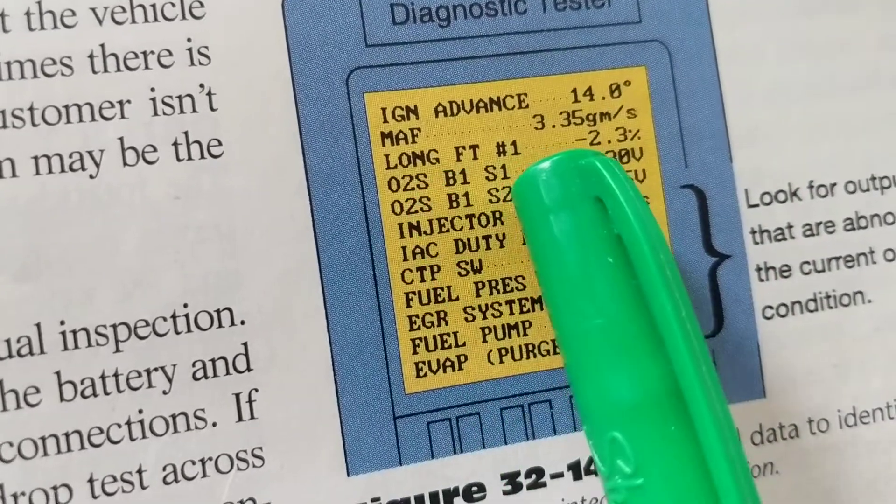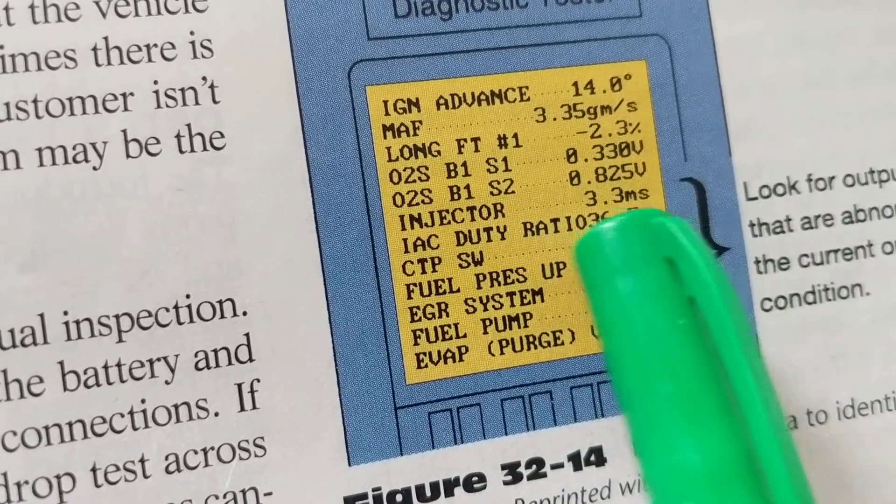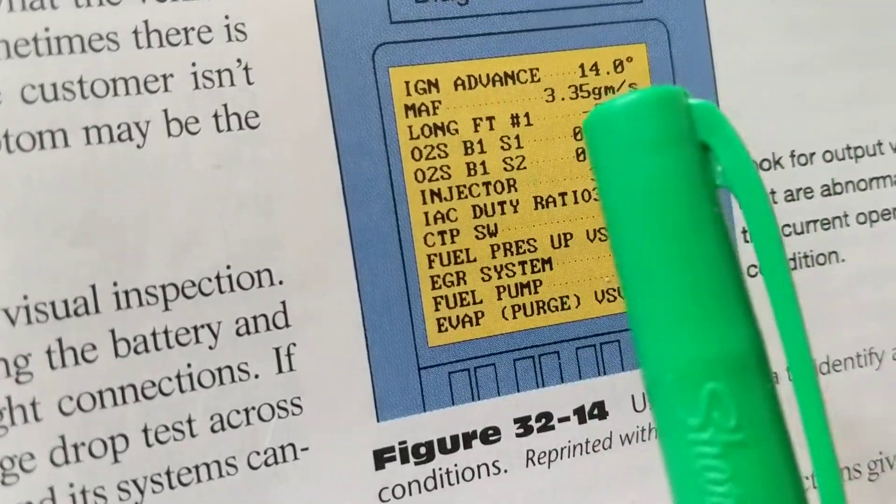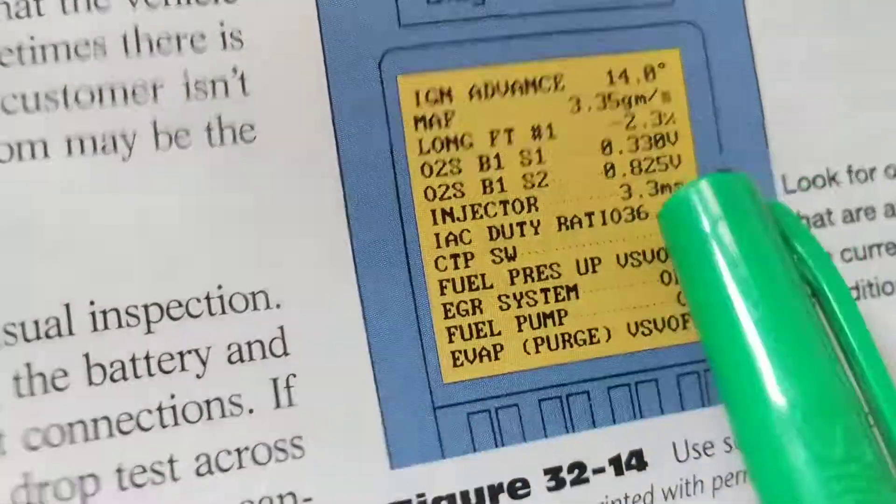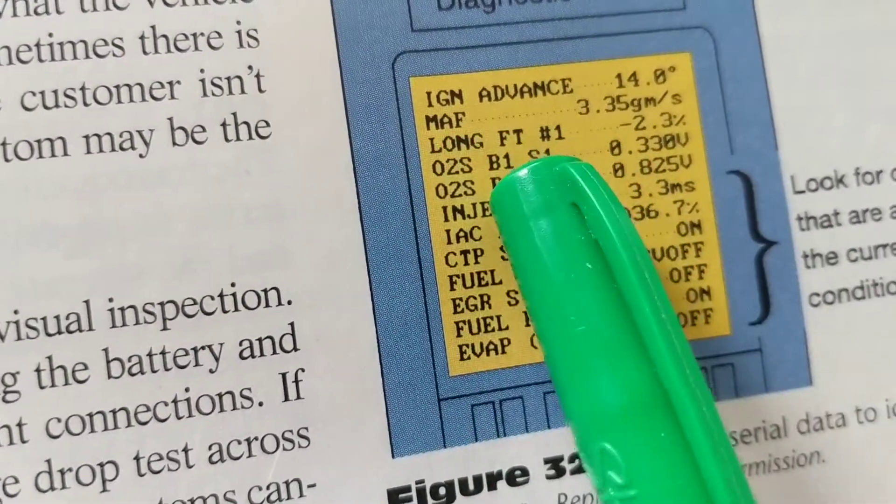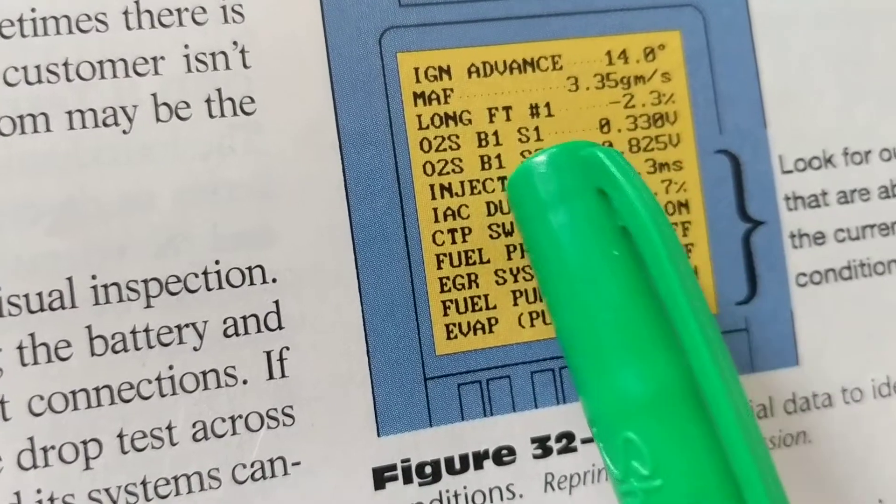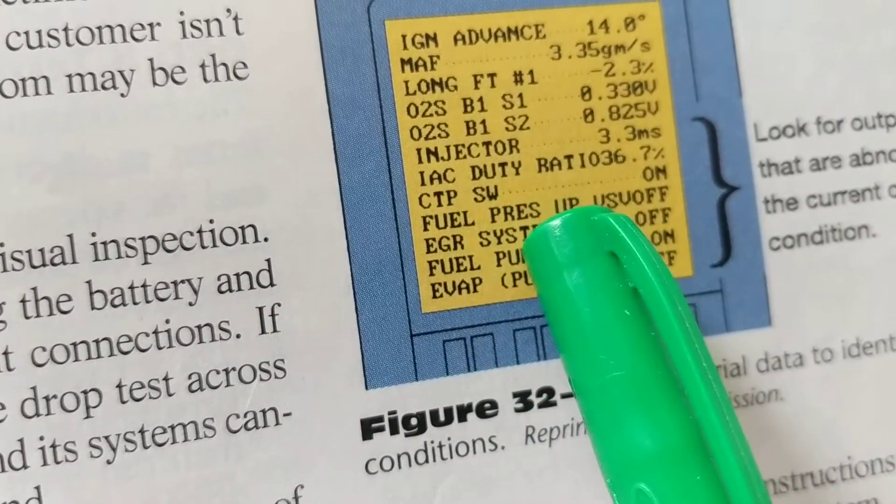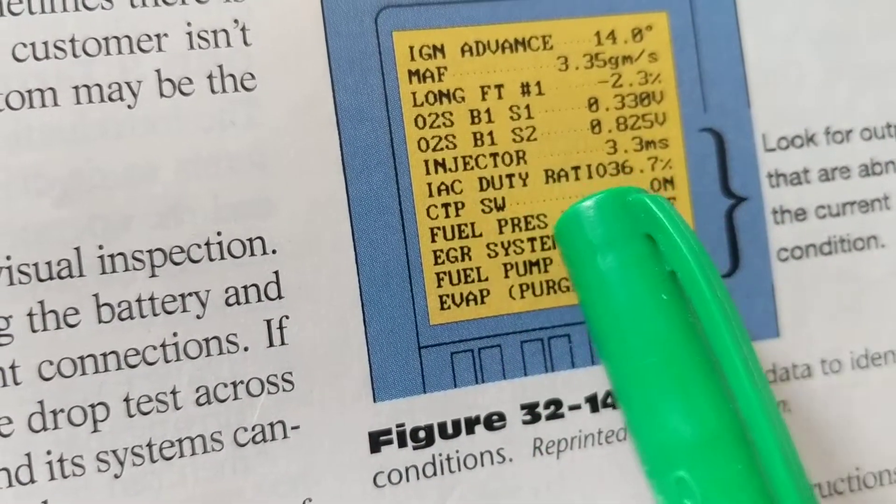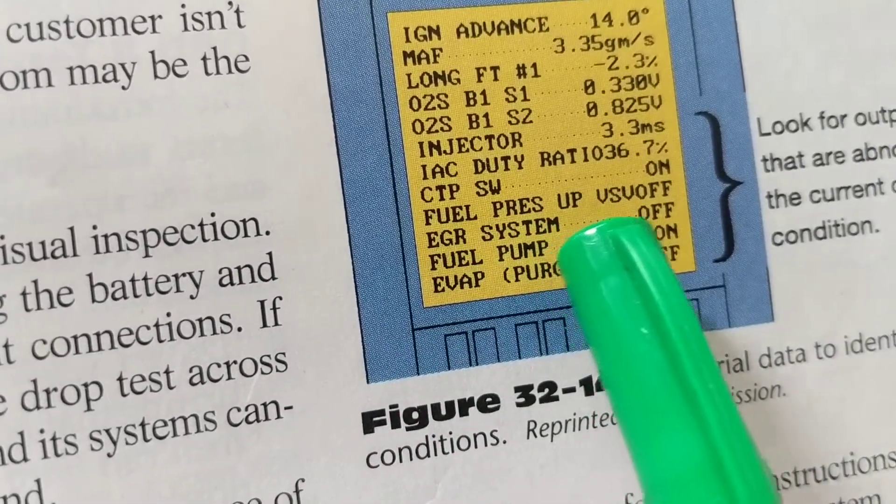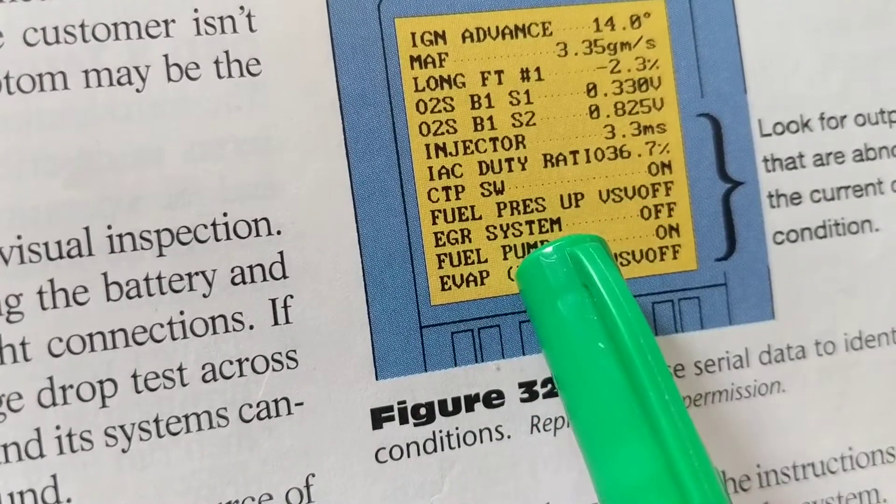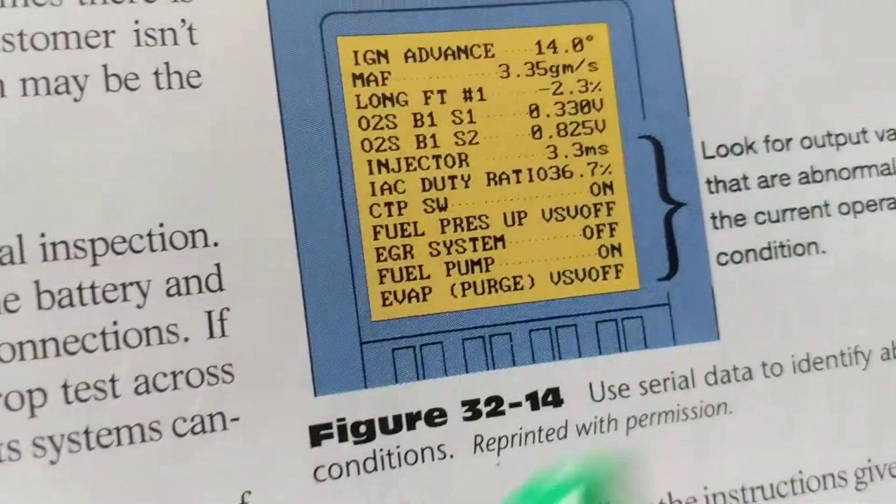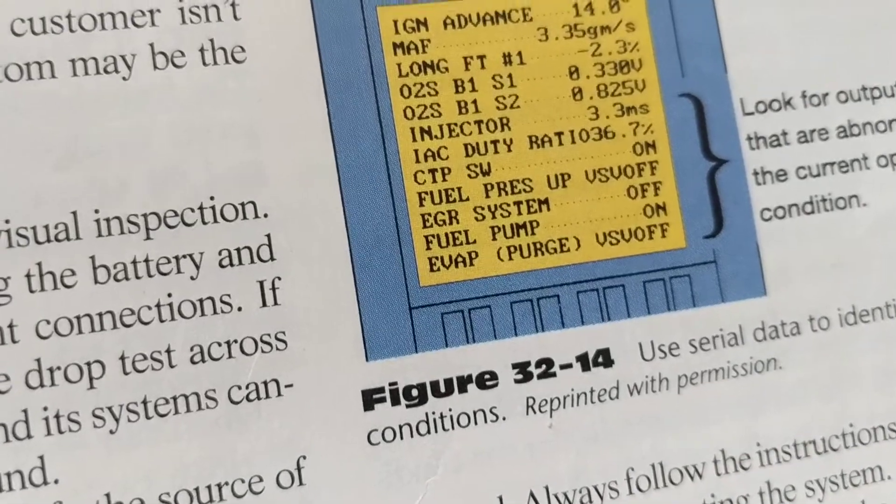Long fuel trims—the computer corrects if there's too rich or too lean. It'll either give more fuel or less fuel to the fuel injectors. Oxygen sensor bank one sensor one, bank two sensor two, injector on time 3.3 milliseconds, intake air control motor, fuel pressure, EGR system is off or on, fuel pump is on or off, EVAP purge is on or off. You can see many, many things.